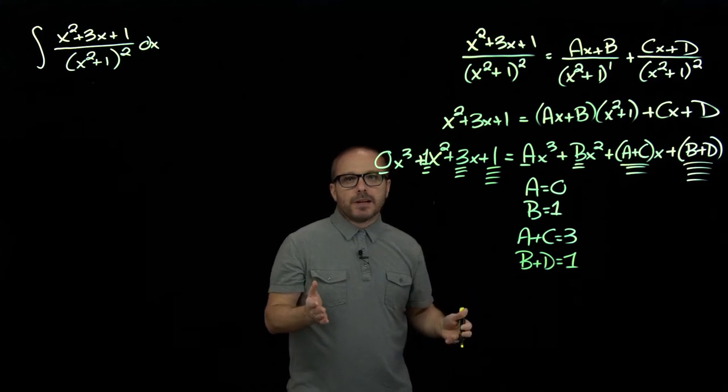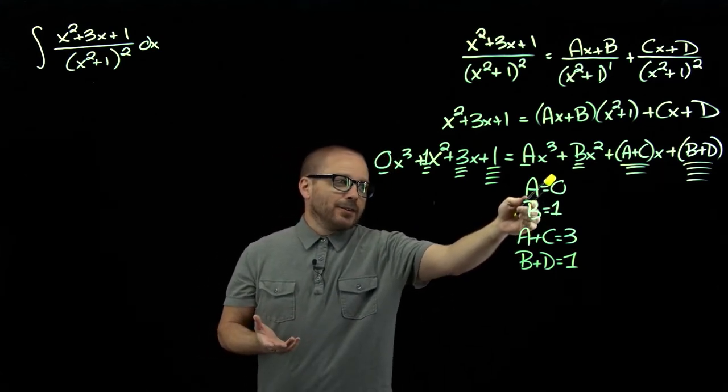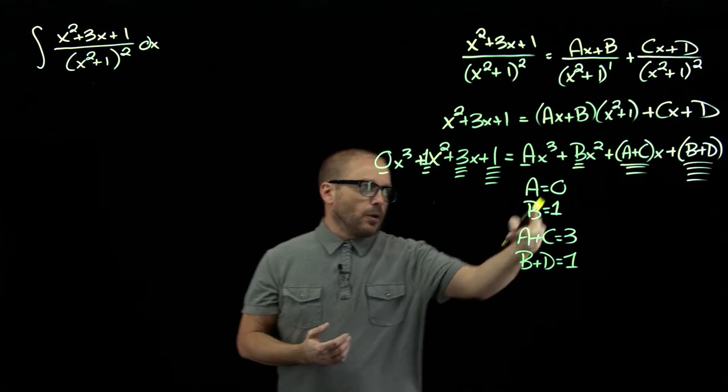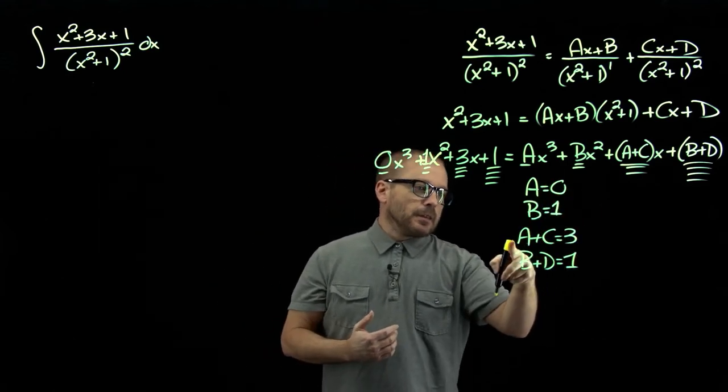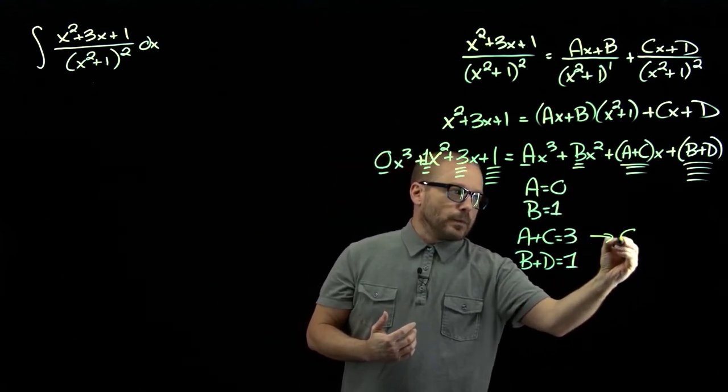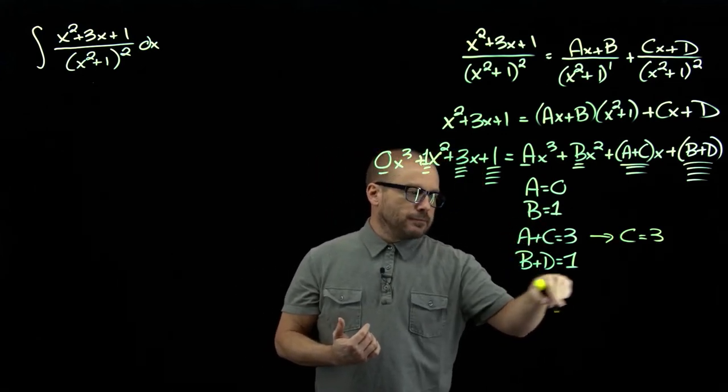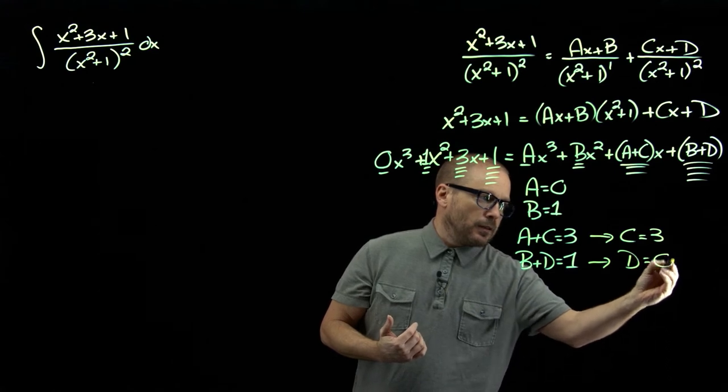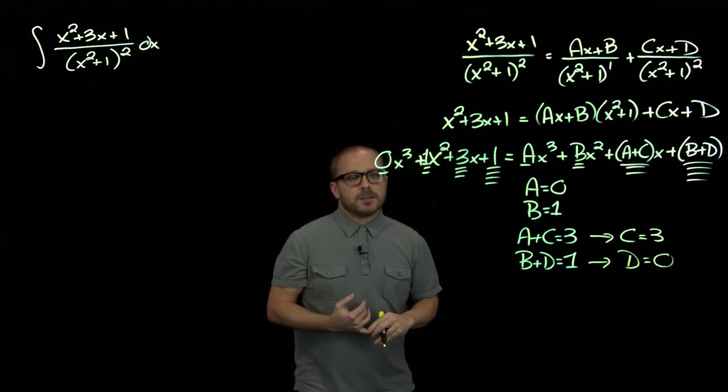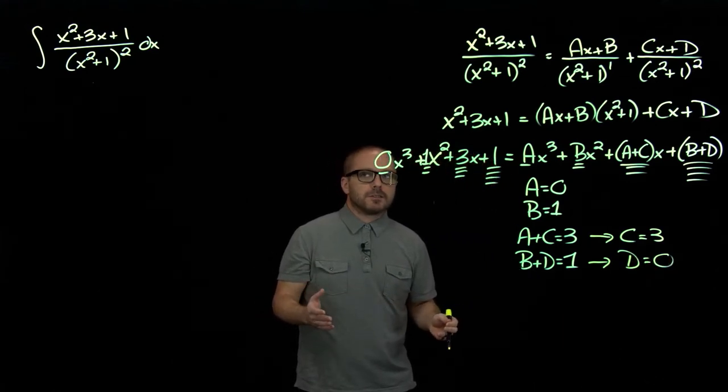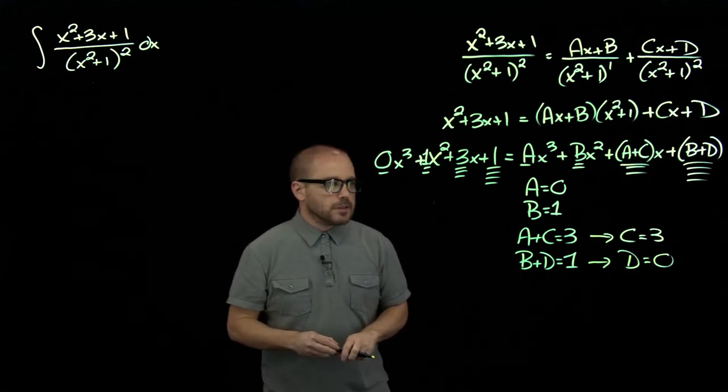And this works out pretty nice. We had two of those already. We know a is zero and b is one, so a being zero tells us that c is three, and b being one tells us d is zero. So we have all our coefficients, so let's return to our integral and see what we have.